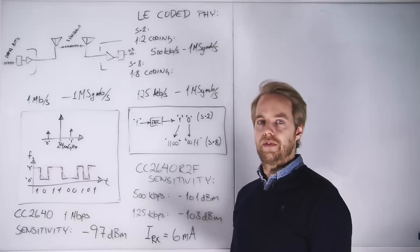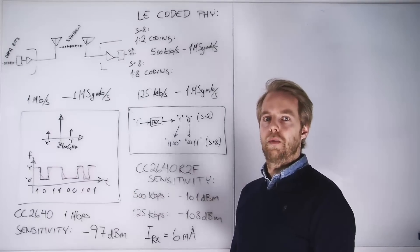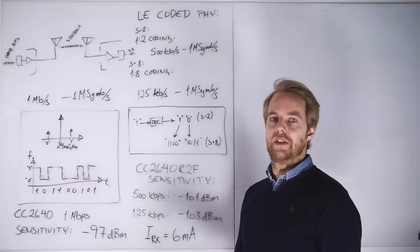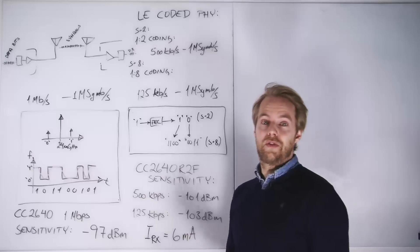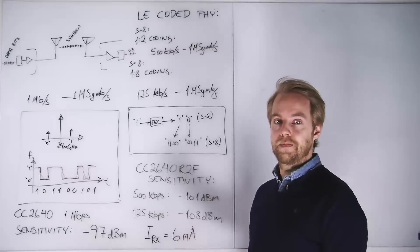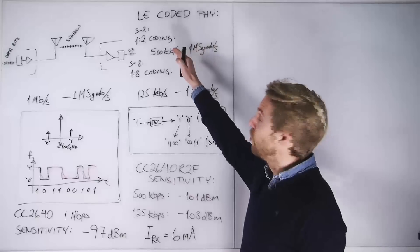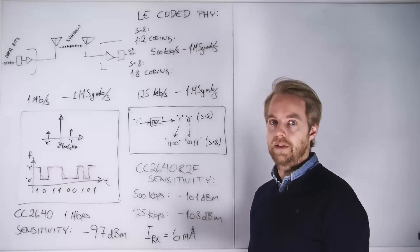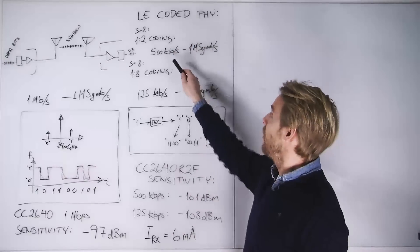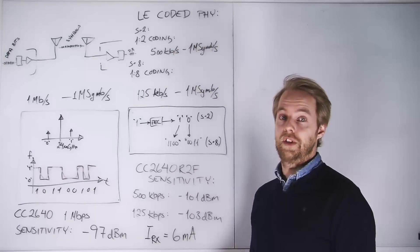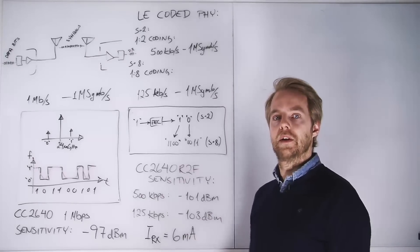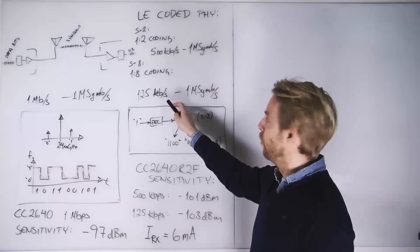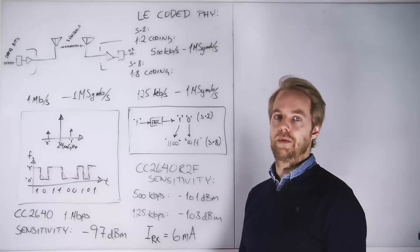With coding that is different. You basically use more symbols to represent each data bit. For Low Energy coded PHYs, there are two stages. We can either use two symbols per data bit, which gives us a data rate of 500 kilobits per second, or we can use eight symbols to represent each data bit, which gives us a data throughput of 125 kilobits per second.